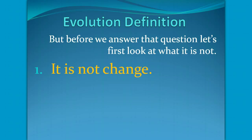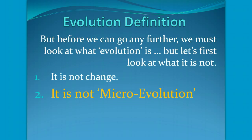First of all, it is not change. If a creature changes in color or size, a bird has a beak that changes in its size, or anything like that — even color — really has nothing to do with evolution. When we talk about the theory of evolution, it is not microevolution. Microevolution is the differences that you can find in one type of a creature.